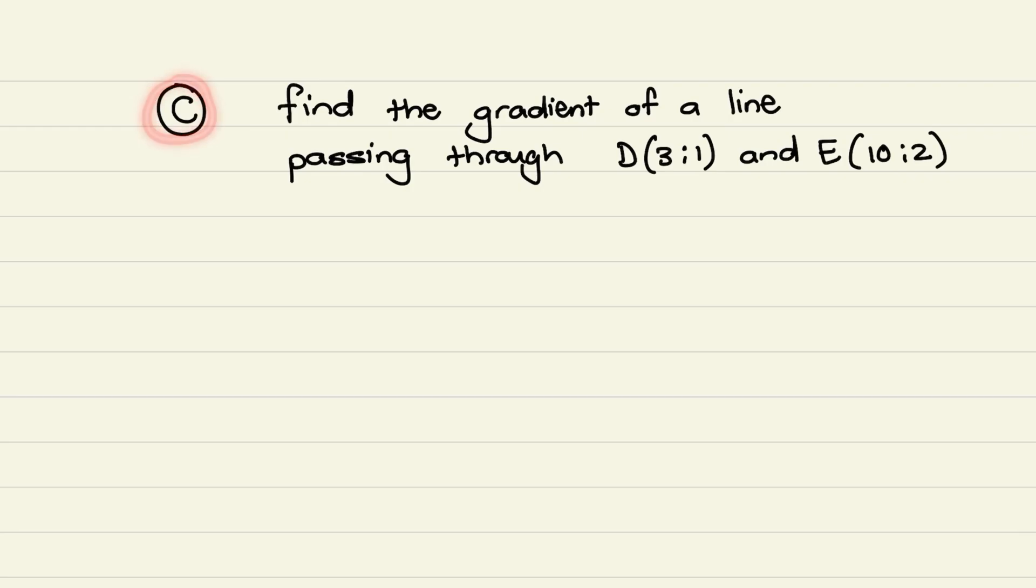In our third example, we want to find the gradient without the equation and without a diagram. So the question says, find the gradient of a line passing through point D with coordinates 3 and 1 and point E with coordinates 10 and 2.